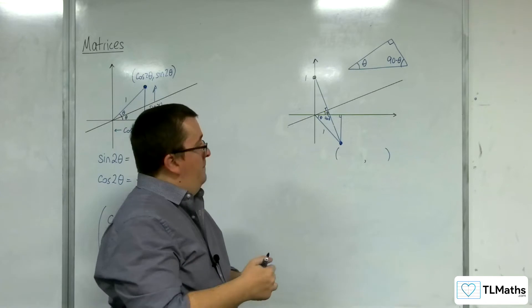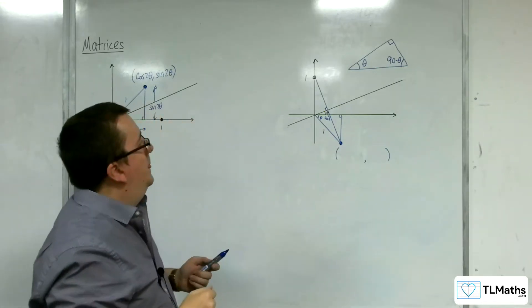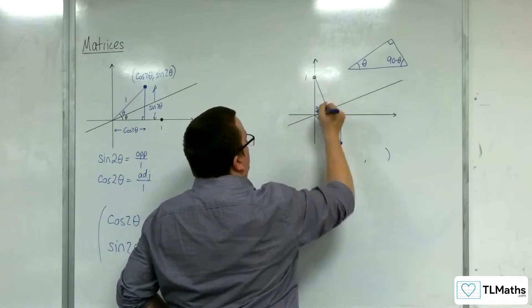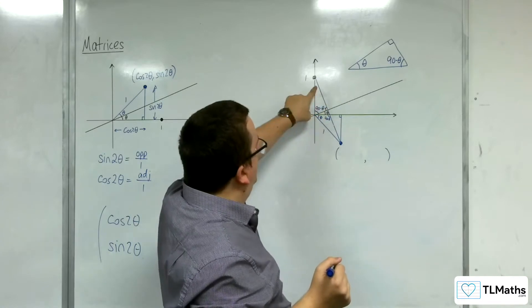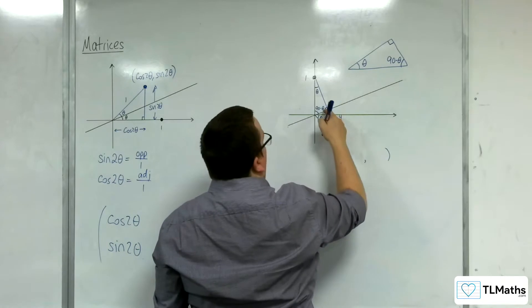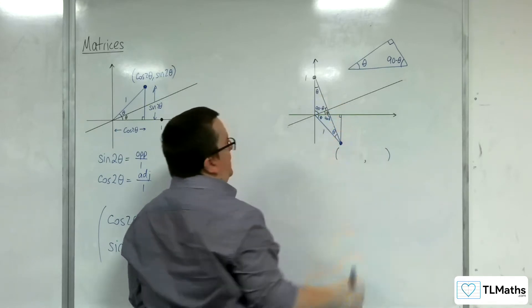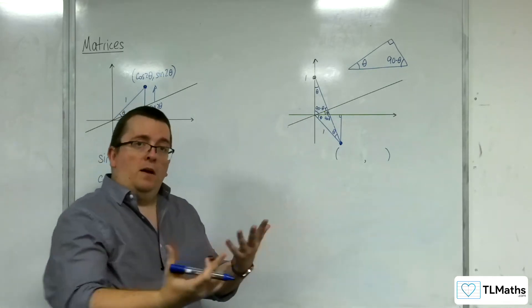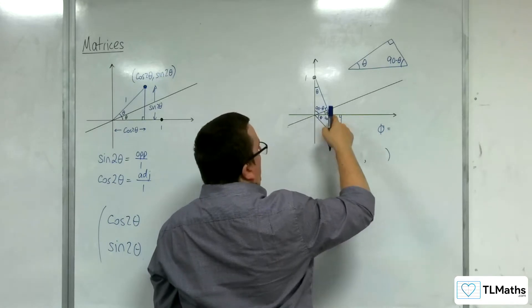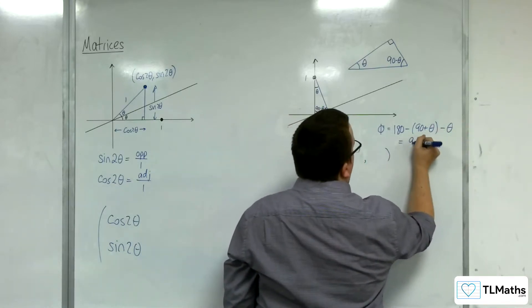What would be interesting is working out what that angle is. If that angle is theta, then that angle is 90 minus theta. If that's 90 minus theta and that's 90, then this angle would have to be theta in order for those three angles to add up to 180. If that's theta, then this one here would also have to be theta, just from the mirror image of the point. So phi is 180 degrees take away 90 plus theta, take away theta, which leaves me with 90 minus 2 theta.